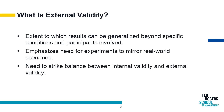External validity in the realm of experimental design stands as a pivotal dimension shaping the impact and relevance of research outcomes. At its core, external validity addresses the extent to which the results gleaned from a specific experiment can be generalized beyond the confines of that particular study, beyond the unique conditions and participants involved. This broader generalizability is crucial for the research to have real-world applicability, allowing its findings to extend meaningfully to diverse populations, settings, and even different points in time.